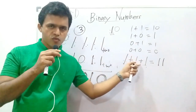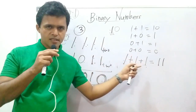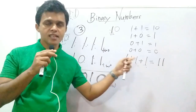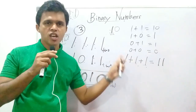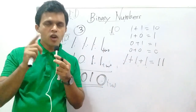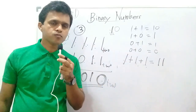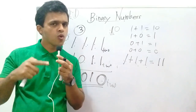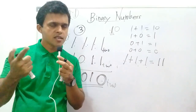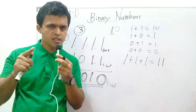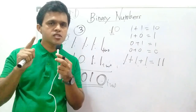To do these sums properly you must know these relations: one plus one is ten (10); one plus zero is one; zero plus one is one; zero plus zero is zero; and one plus one plus one equals eleven (11).